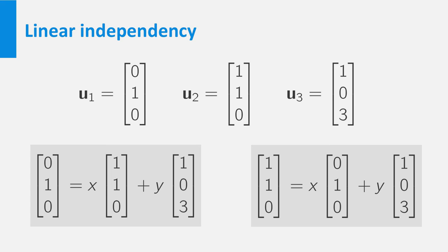The same holds for U1 and U2. Neither of them are linear combinations of the other two. Look at the system of equations on the left. If the second coordinate of the right hand side needs to be 1, then x must be equal to 1.